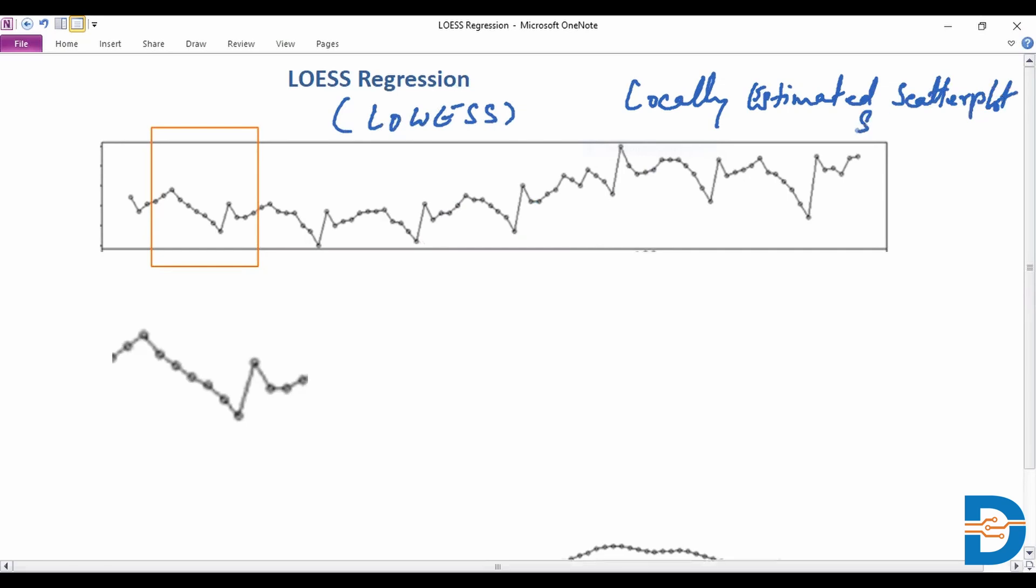So what this is doing is we are basically trying to fit a curve to our data rather than simply have a straight line coming from linear regression. We are doing a better job at representing this data by giving a curve over this entire data and how we do this is by separating our data into different segments.